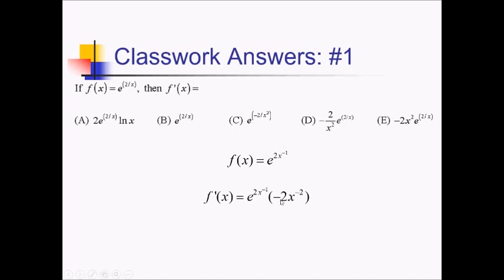Now I have to rewrite this so it looks like one of the answer choices. This whole thing is going to be negative — it's going to be a fraction because we have x to the negative 2. In the numerator I have e to the 2 over x, and I also got this 2 from here. In the denominator I have x squared moving downstairs. Matching an answer choice, this looks like choice D.